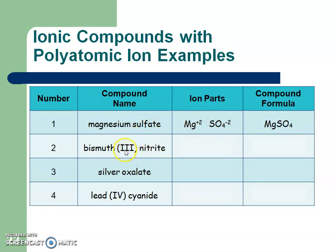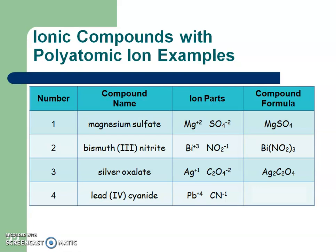For bismuth 3, the Roman numeral gives the charge directly, but look up nitrite on your table. Those charge numbers are different, so crisscross them — nitrite is a polyatomic ion, so you need parentheses. For the silver example, crisscross the charges, but since silver is an element by itself, no parentheses are needed. For lead with cyanide — cyanide is one of those exceptions, a polyatomic ion of C and N — crisscross the charges and use parentheses, because you have four cyanide polyatomic ions, not four individual nitrogen atoms.